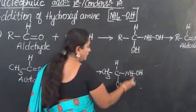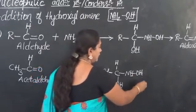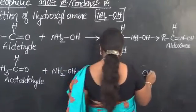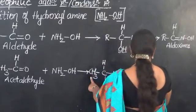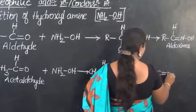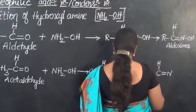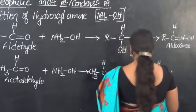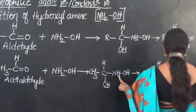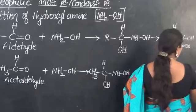Now, elimination of water takes place. OH from one side and H from the nitrogen side are removed. Therefore, we land up with CH3 linked with carbon, and that carbon linked with nitrogen by a double bond, with hydrogen above remaining as it is. There is no hydrogen remaining on nitrogen, so it is linked with OH, and a molecule of water is released.